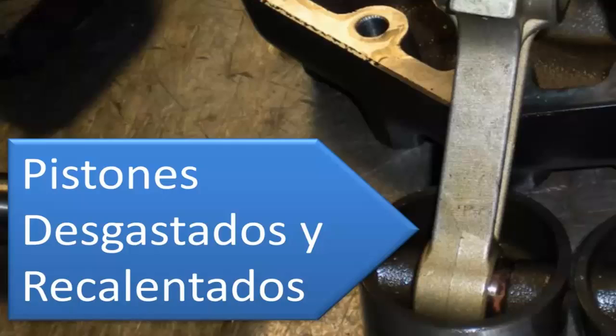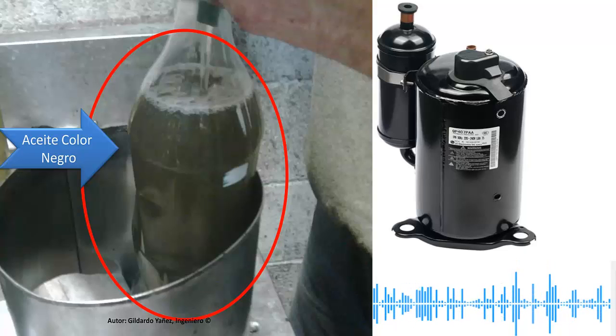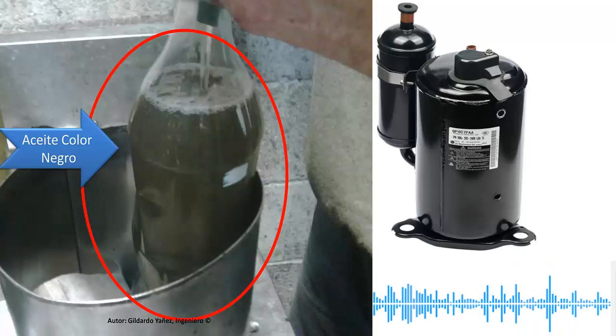3. Moisture Contamination. In some cases, the oil can take on a light brown color with white streaks due to contamination by moisture. This is also harmful to the system and can shorten its lifespan.